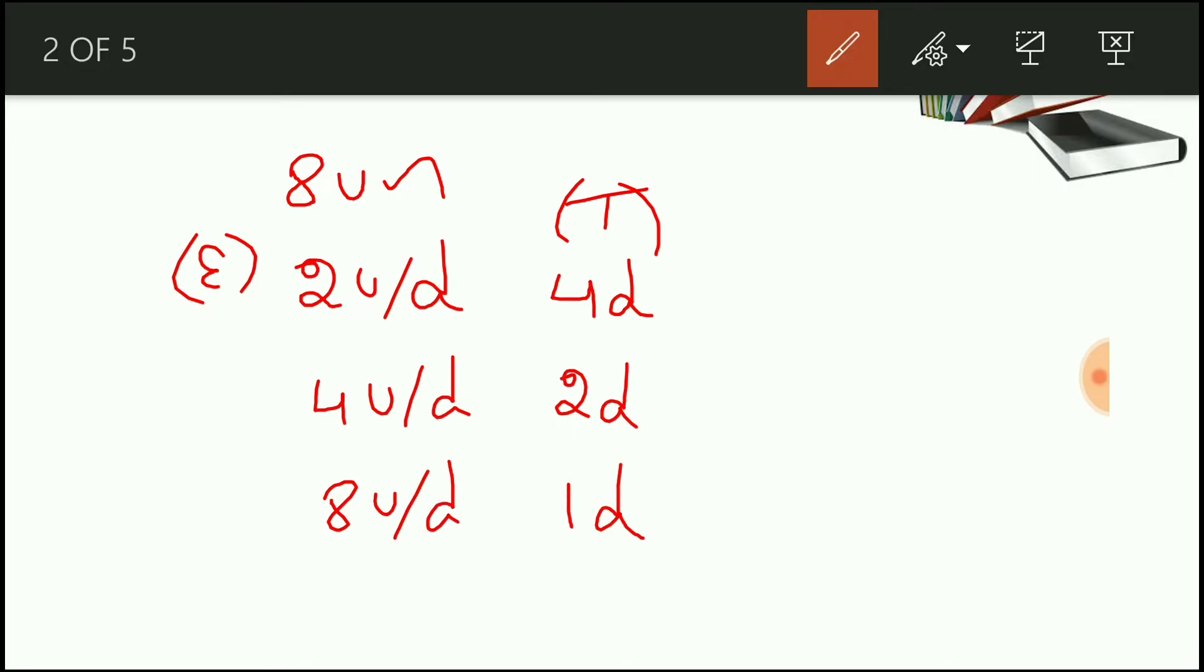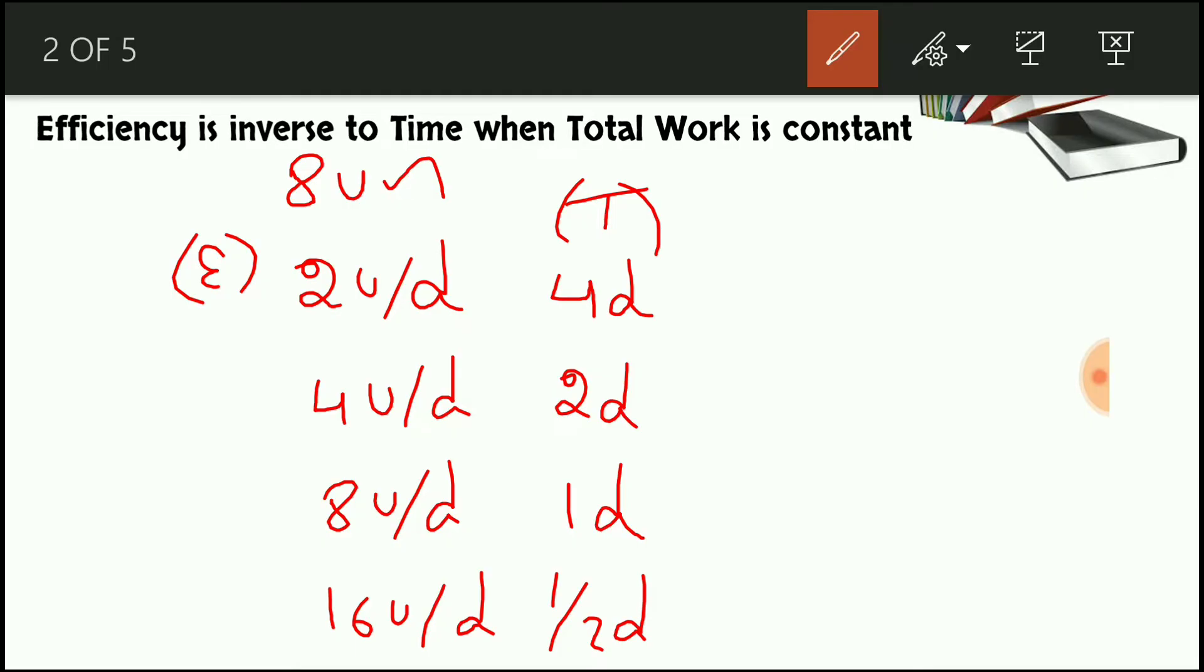So if the same work is handed to another person with the efficiency 16 units per day, then the job will be completed in half a day. So if you closely observe this number, then we can come to a conclusion when the total work is constant.